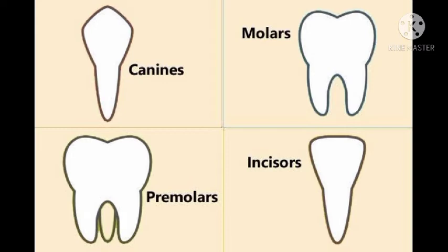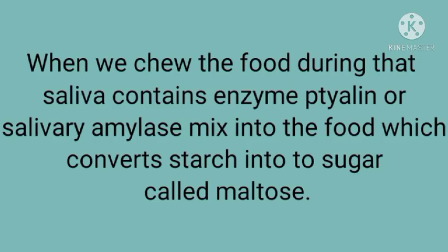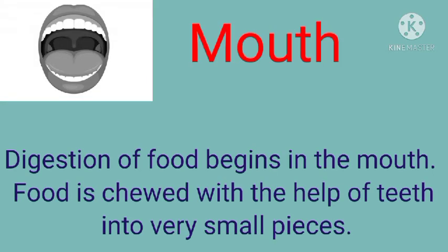When we start chewing the food, the process of digestion begins. Saliva from the salivary glands mixes with the food. The function of this enzyme is to convert starch into sugar called maltose. So the process of digestion actually starts in the mouth when starch is converted into maltose. The mouth contains teeth which convert food into fine pieces.